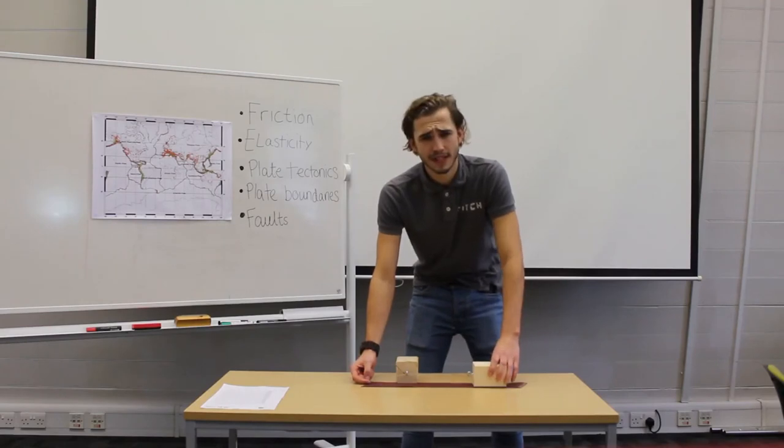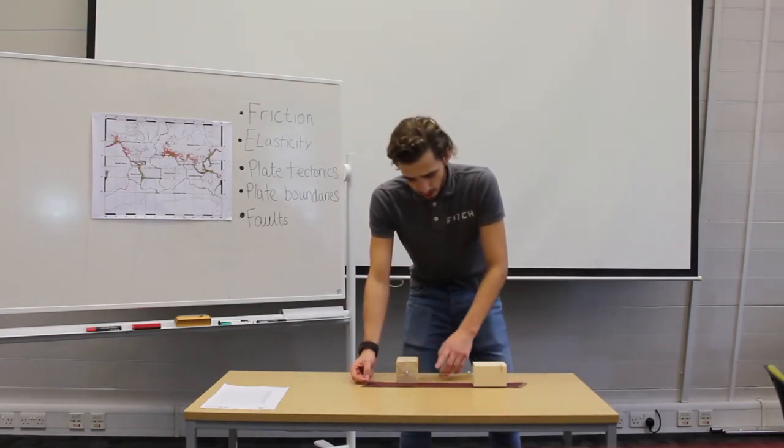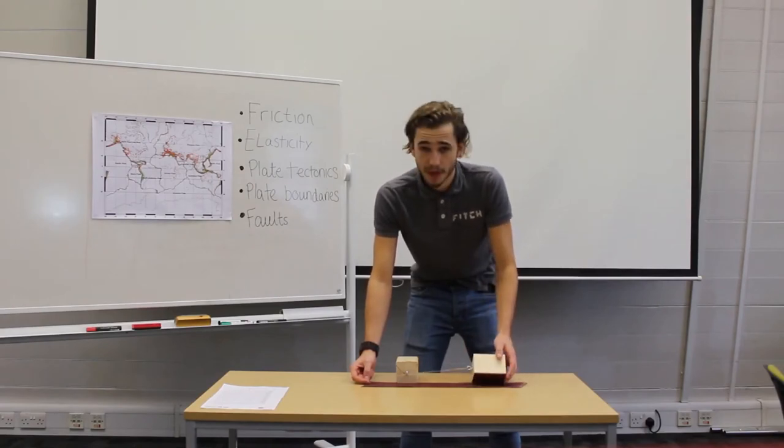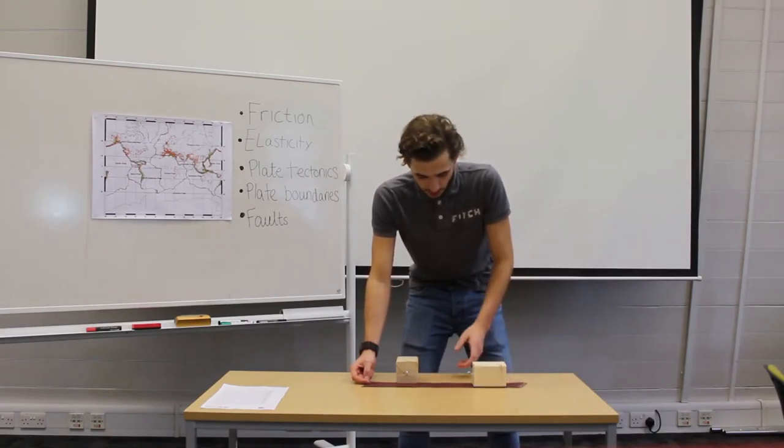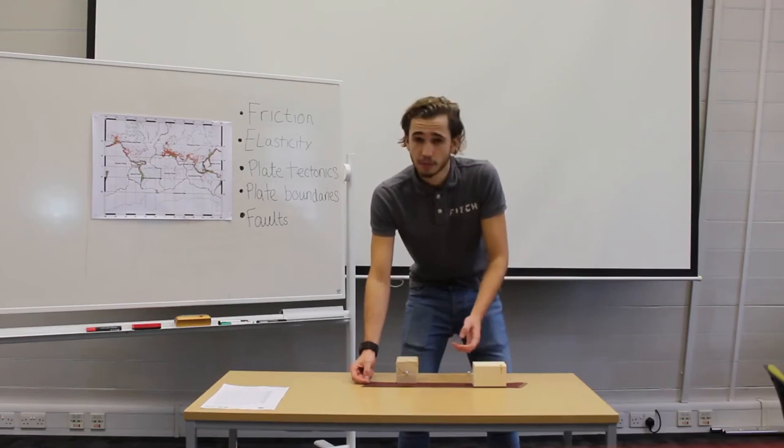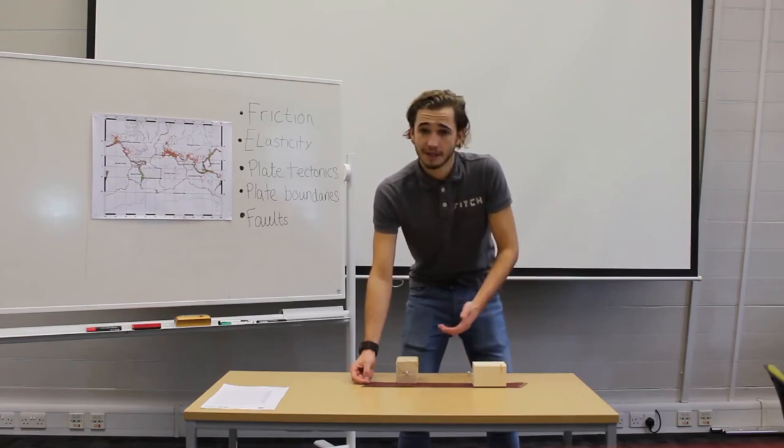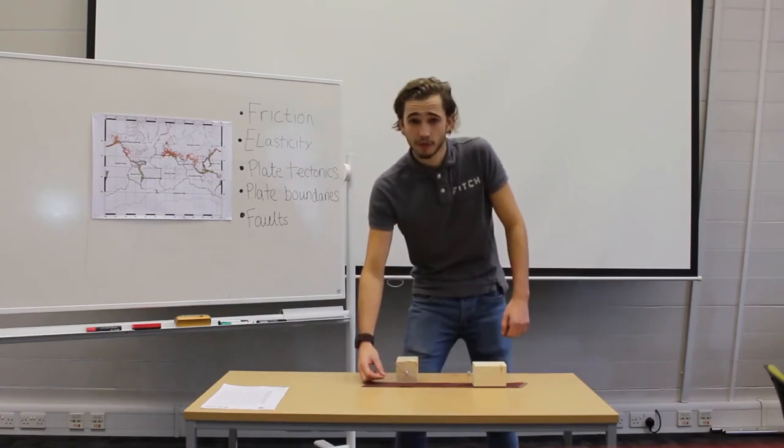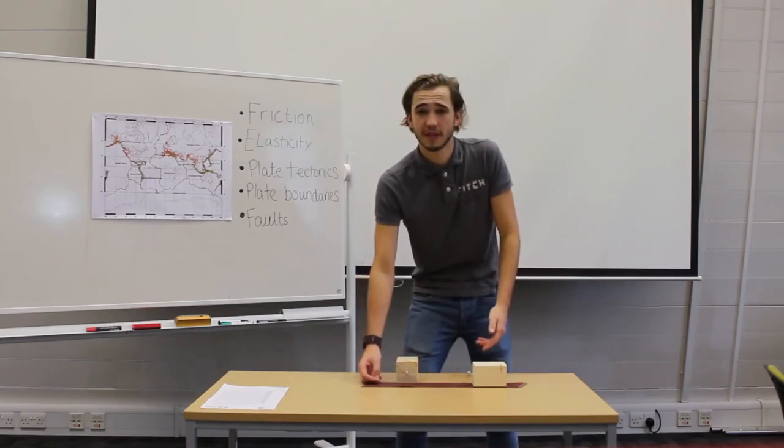Now, let's put all of these things together. So as you pull on the string, initially you'll notice that the block doesn't move because of the two rough sandpaper surfaces. At this point, the friction is greater than the pulling force. Similarly, in a fault, the friction between the two sides stops the fault from moving. This is the equivalent of the fault surfaces being locked in the real world.